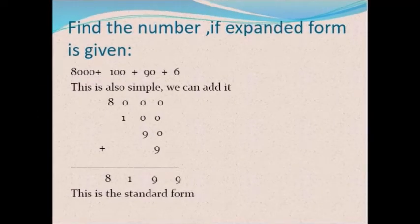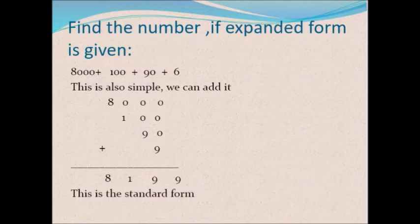Now I have told you how to convert the standard form of a number into expanded form. Now if I give you the expanded form, how can you find the standard form? If the addition signs and place values are given, that is the expanded form, and the number itself is the standard form. For example: 8000 + 100 + 90 + 6. We can add these together to get 8196 — that is the standard form.